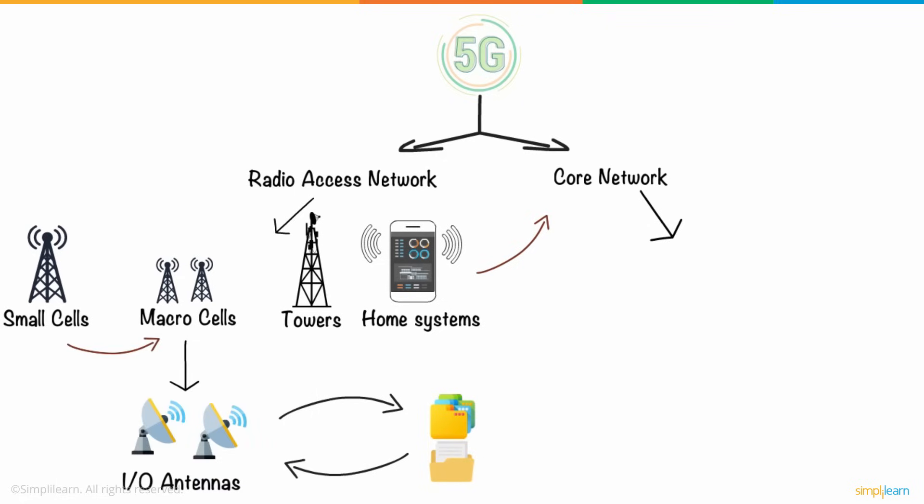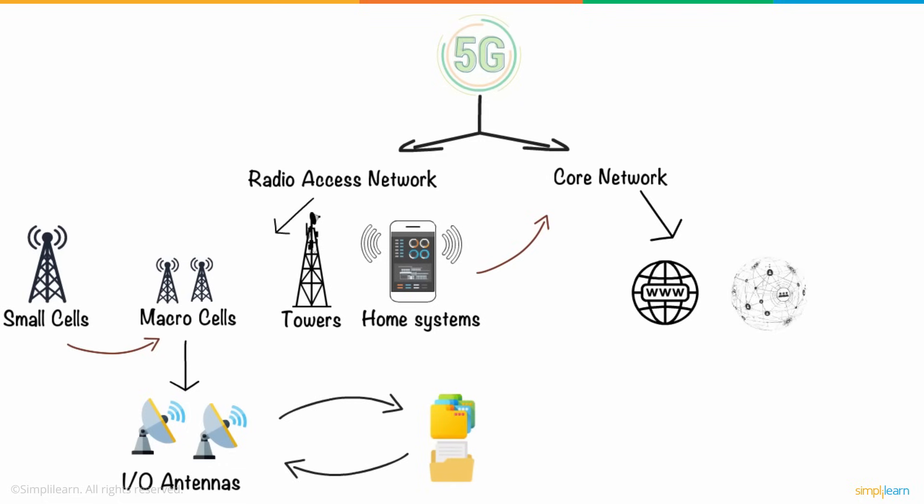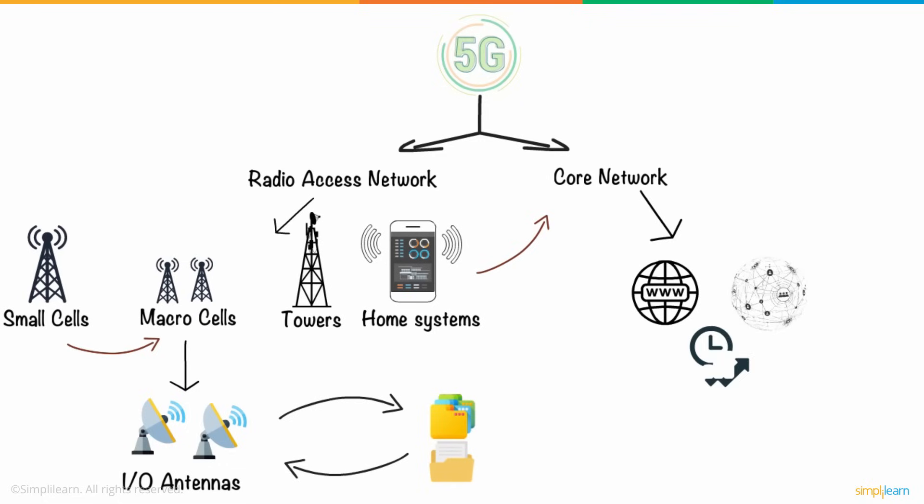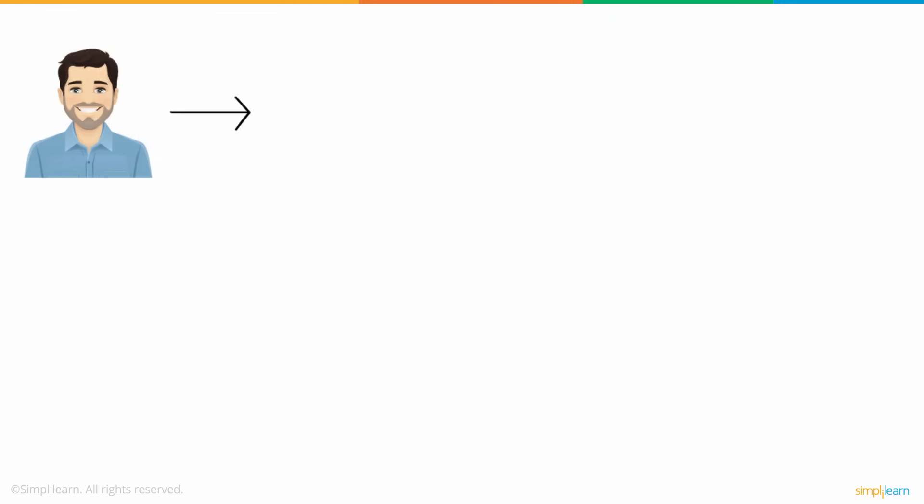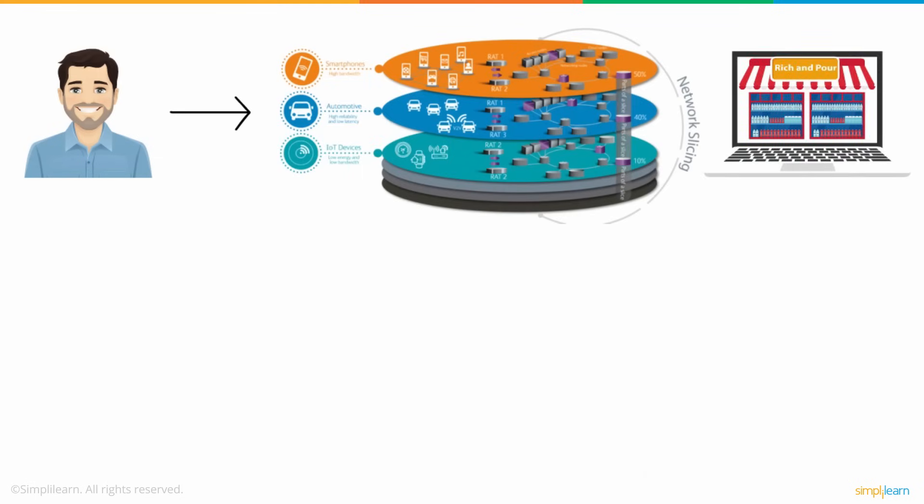And small cells complement these macro cells. Meanwhile, the core network of 5G manages all the internet and data connections. The core network is designed to integrate with the internet much more efficiently. The core manages the advanced features of 5G, like network function virtualization and network slicing. Ted learned that network slicing is a wise way of cutting the network into several slices for a specific business